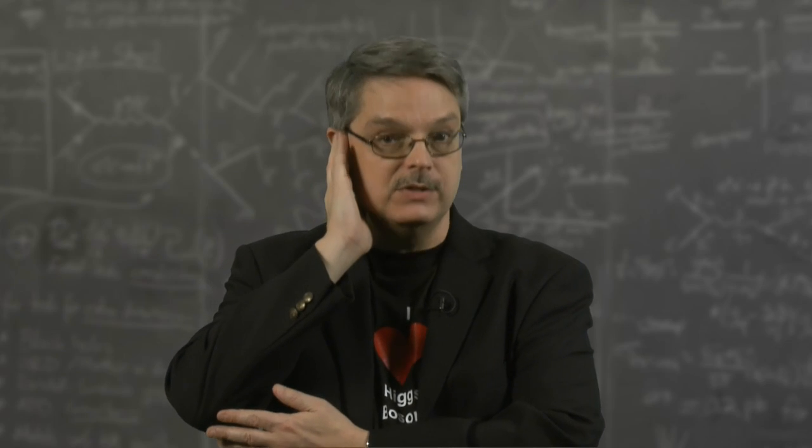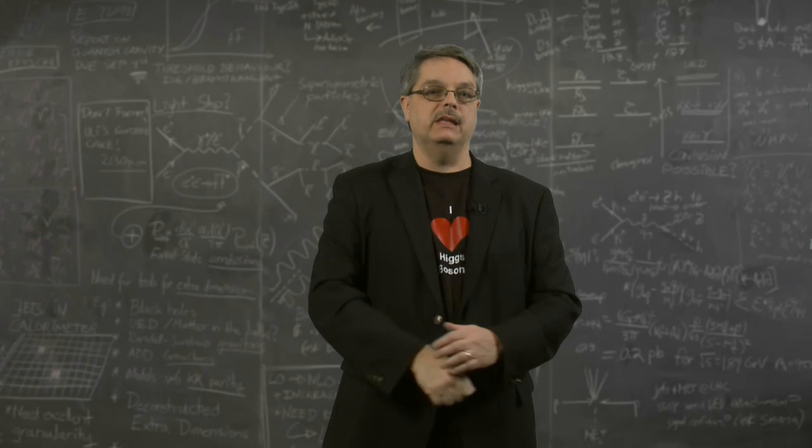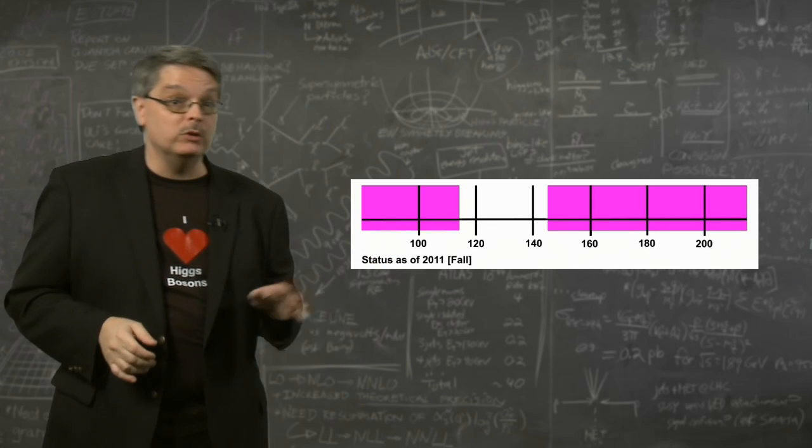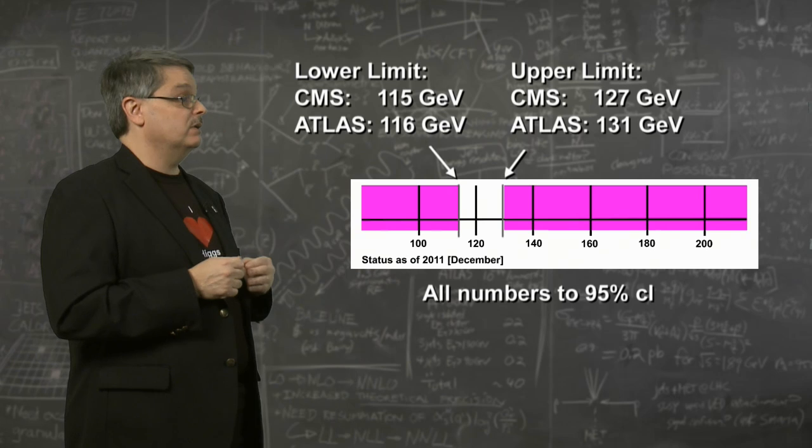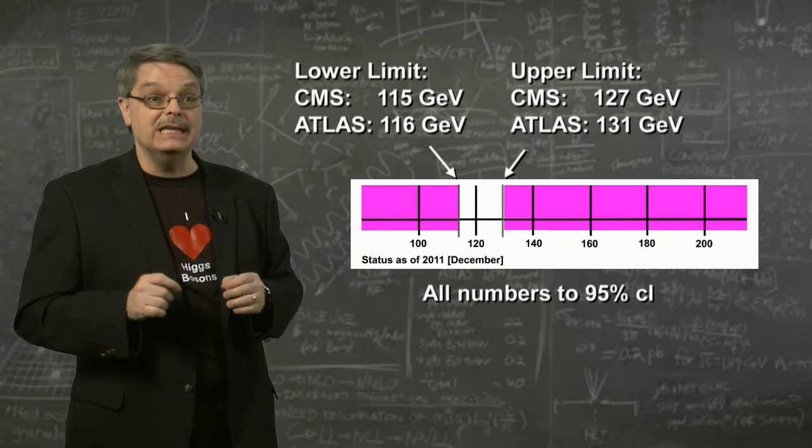Wait a minute. I'm hearing something. Apparently, ladies and gentlemen, we have some late-breaking news. New measurements, using even more data, have ruled out an even larger possible range of masses of the Higgs boson. Further, the experiments are studying carefully some very interesting hints in the remaining range.